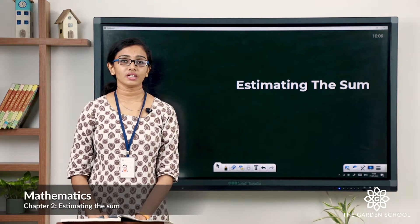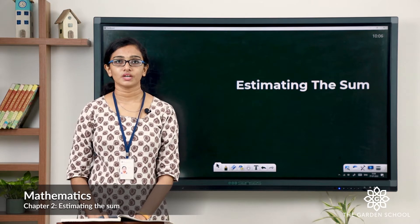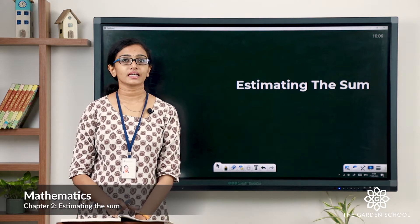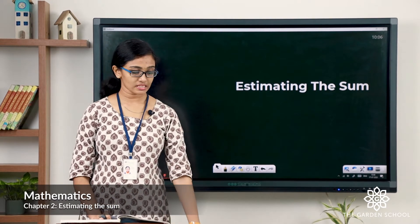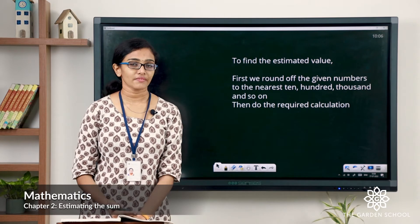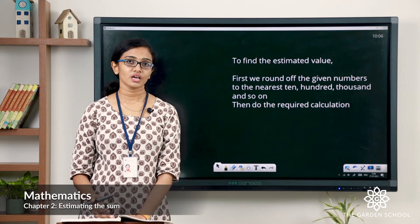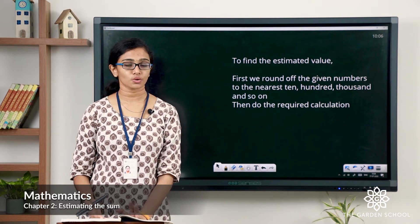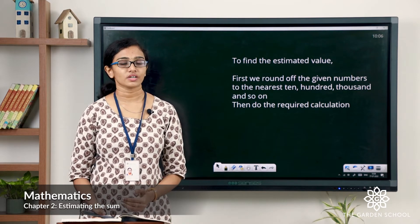In our previous chapter we learned about rounding of numbers. The word estimation simply means guessing the value of a calculation. To estimate a value, we first round off the given numbers to the nearest 10, 100, 1000, and so on, and then do the required calculation.